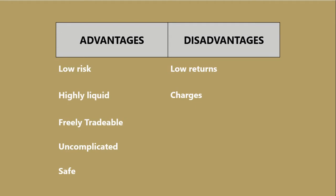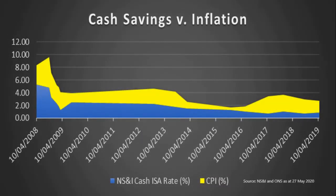Cash also has poor long-term potential. Interest rates are low, and from the slide here you can see that cash savings don't always keep pace with inflation. The blue bar shows the NS&I cash ISA rate going back to 2008, and the yellow bar above it is the Consumer Prices Index. Your cash savings against inflation show that your buying power reduces over time.